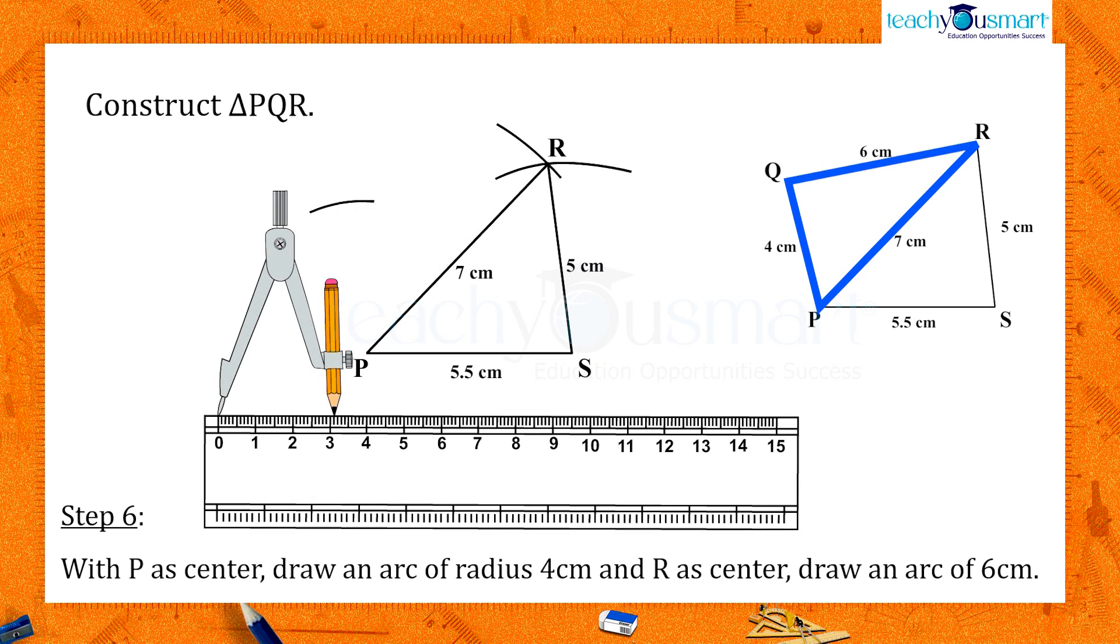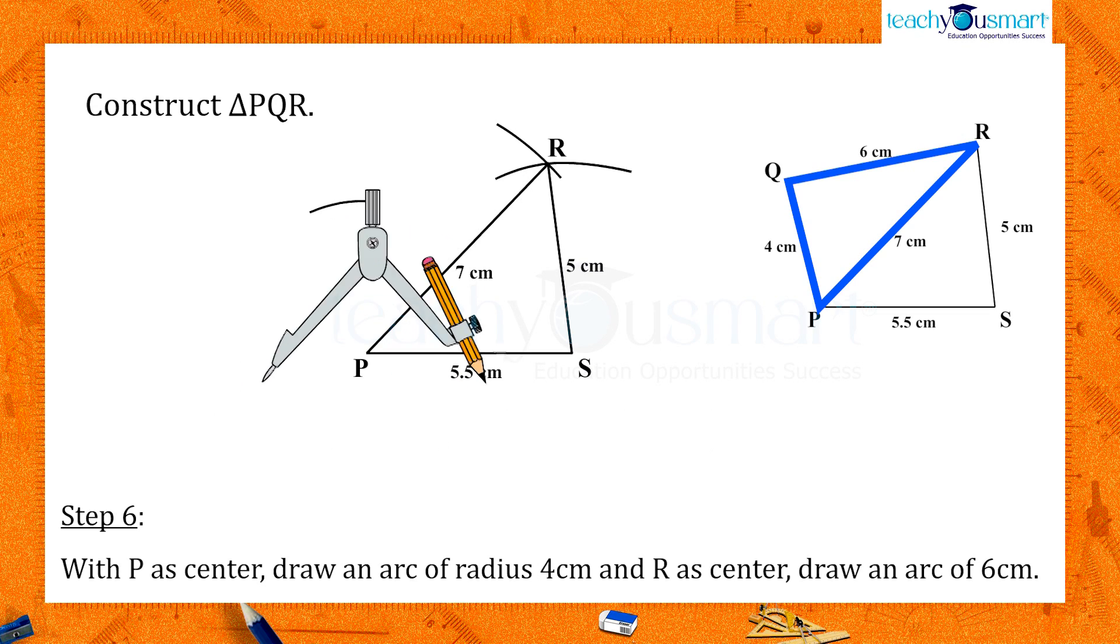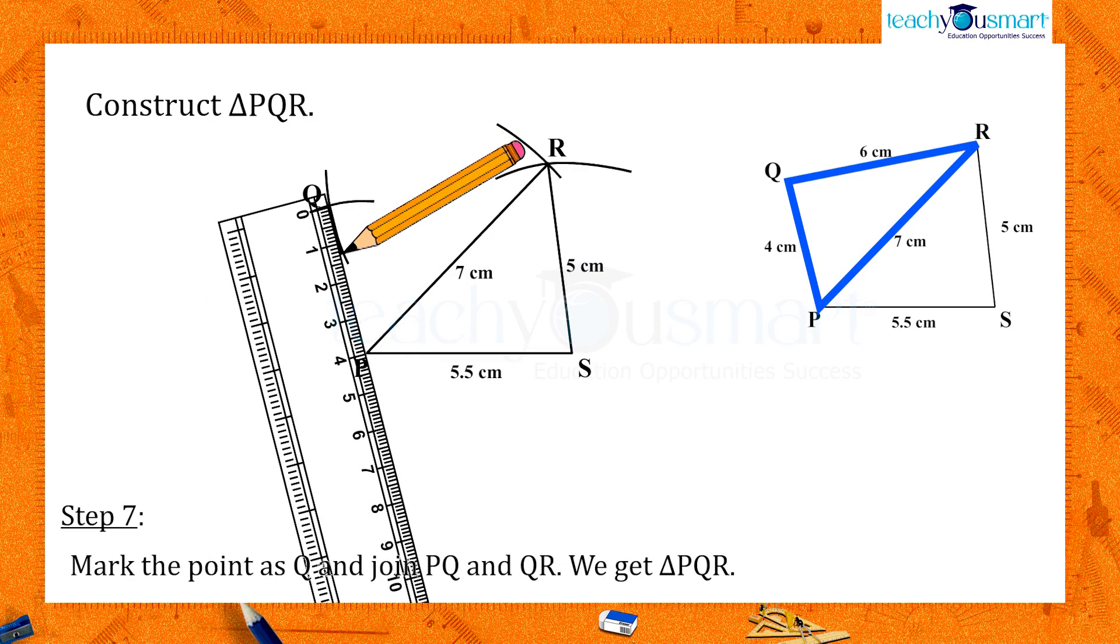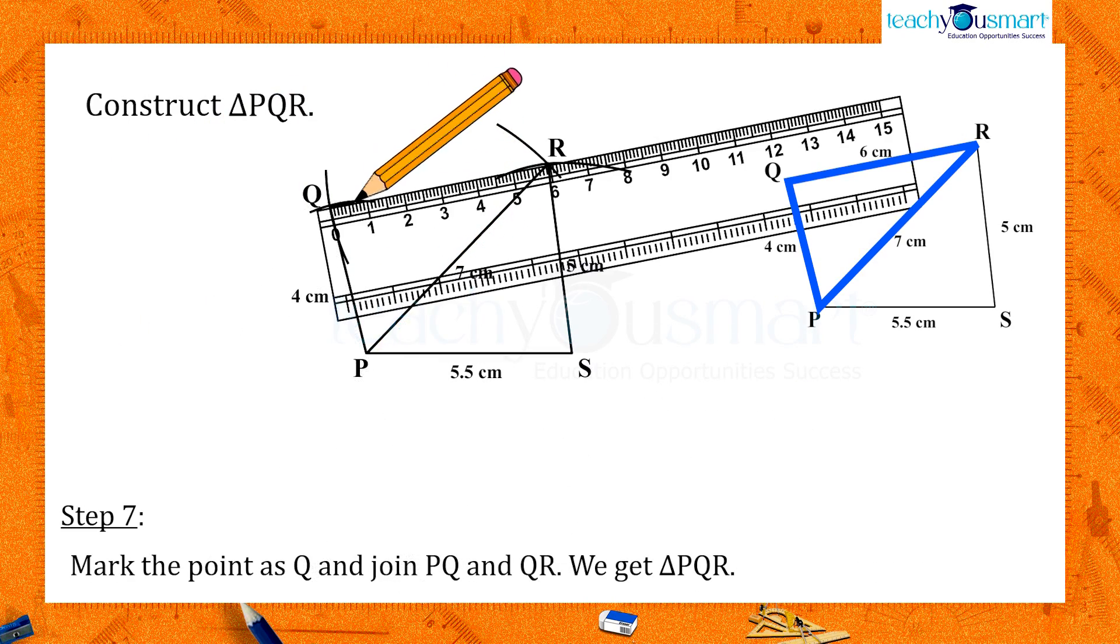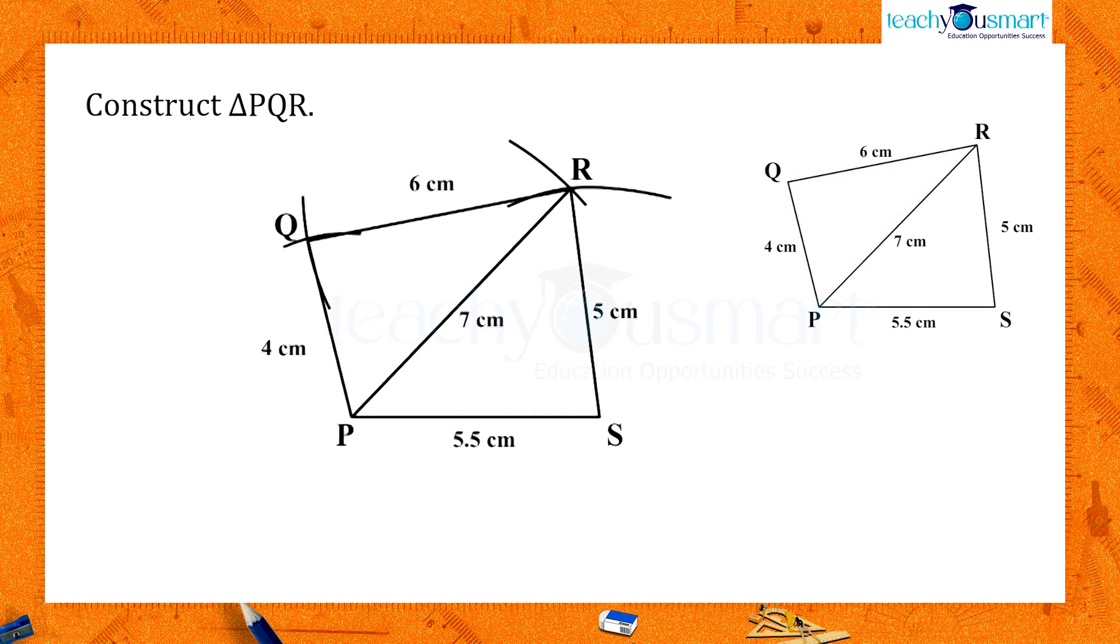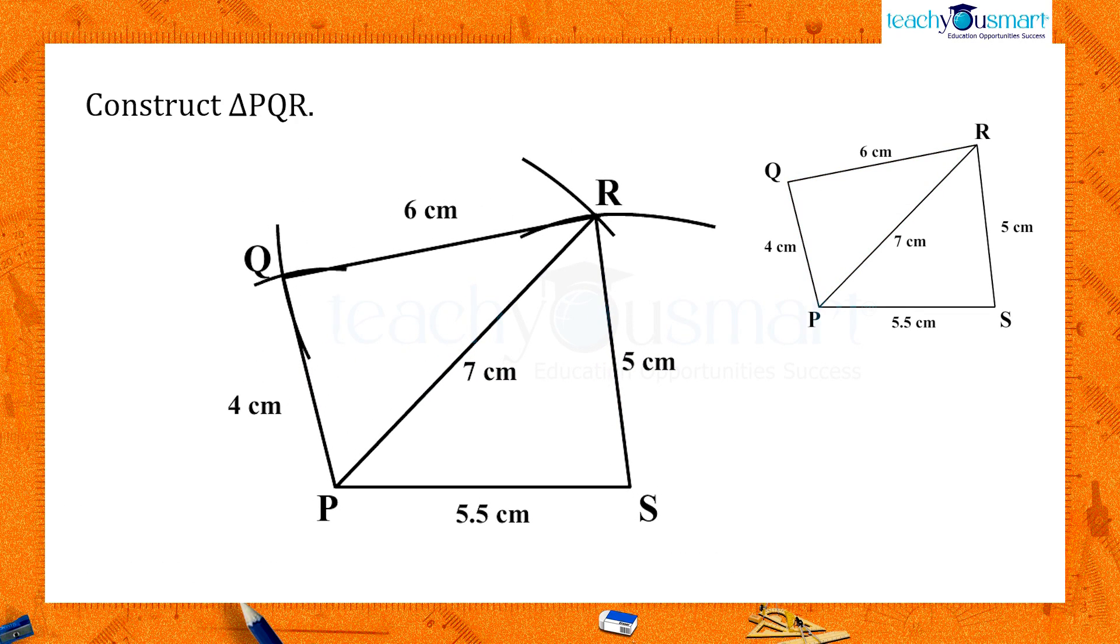And with R as the center, draw an arc of radius 6 centimeters. Both the arcs meet at point Q, joining PQ and QR. We get triangle PQR. It completes our quadrilateral PQRS.